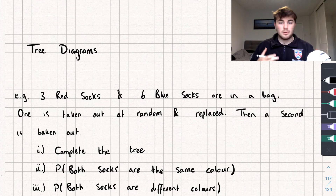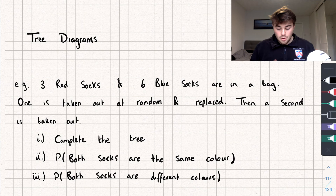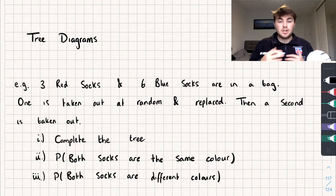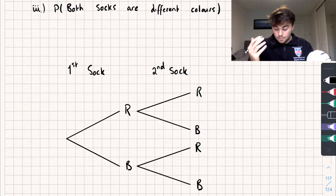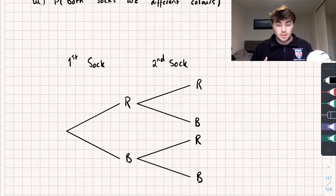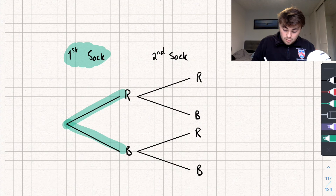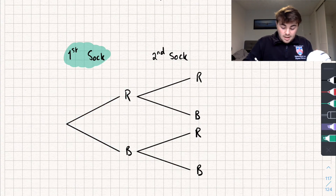The best way to look at this is with a couple of questions. This first one says: three red socks and six blue socks are in a bag, one is taken out at random, replaced, and then a second is taken out. The first part of the question wants us to complete the tree — this is what the probability tree looks like.